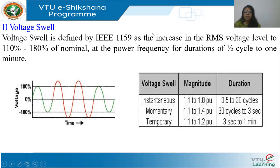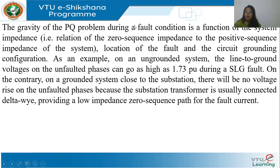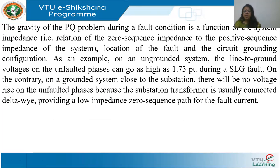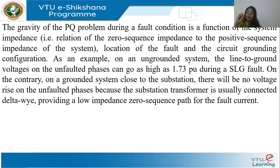The gravity of a power quality problem during a fault is a function of system impedance, zero sequence impedance, fault location, and grounding. In an ungrounded system, a single line-to-ground fault can drive the unfaulted phase voltages as high as 1.73 per unit. EPRI has stated that 80% of power quality problems arise because of improper grounding — proper grounding is one of the most important aspects for improving power quality.